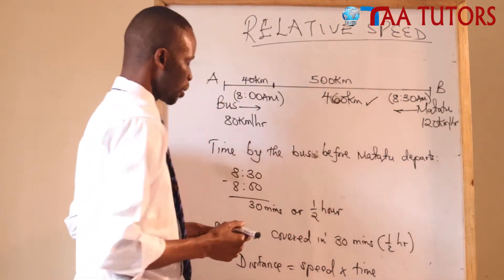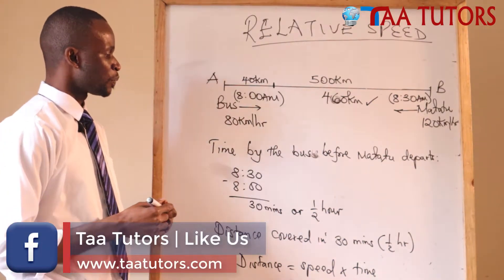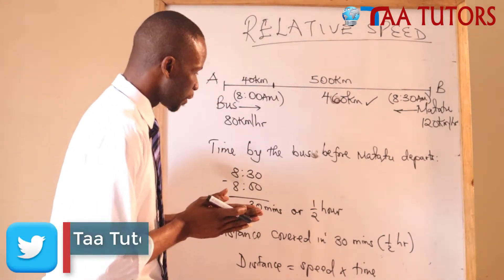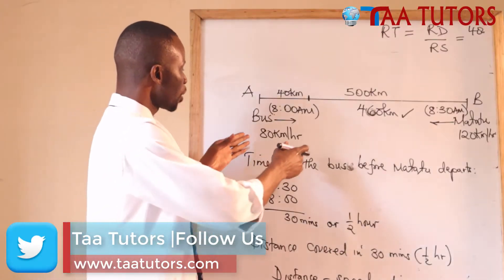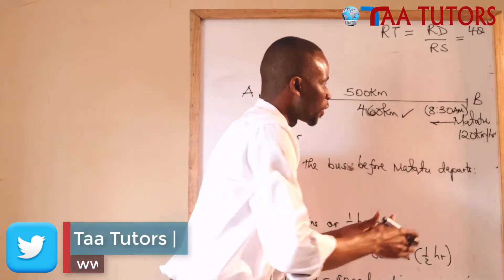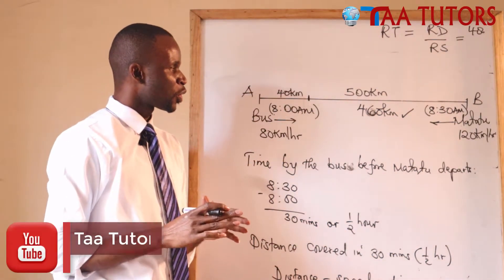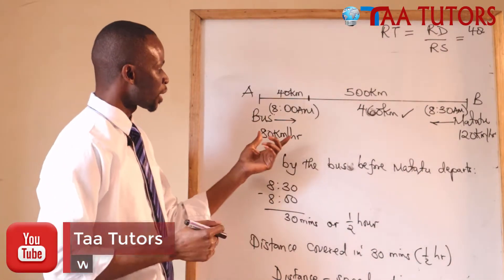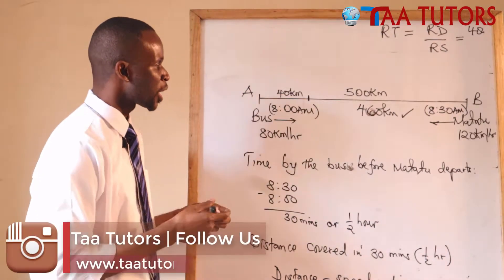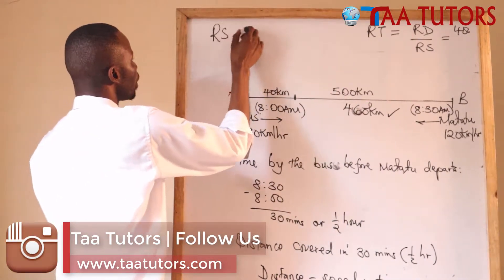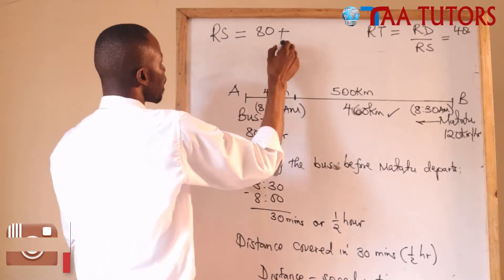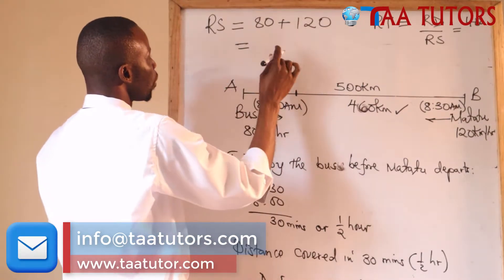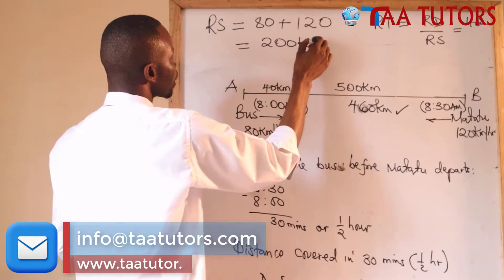Now we calculate relative speed. When objects are moving towards each other, we add their speeds. Relative speed equals the speed of the bus (80 km/h) plus the speed of the matatu (120 km/h), which gives us 200 kilometres per hour.